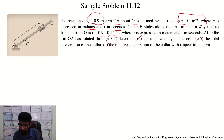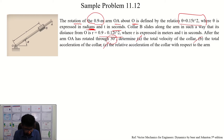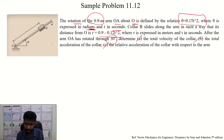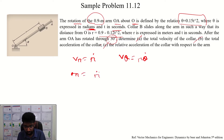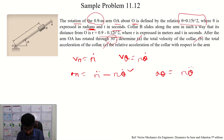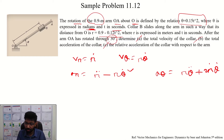To find the total velocity and acceleration, we use the polar coordinate equations: Vr equals R-dot, V-theta equals R times theta-dot, Ar equals R-double-dot minus R times theta-dot squared, and A-theta equals R times theta-double-dot plus 2 times R-dot times theta-dot.